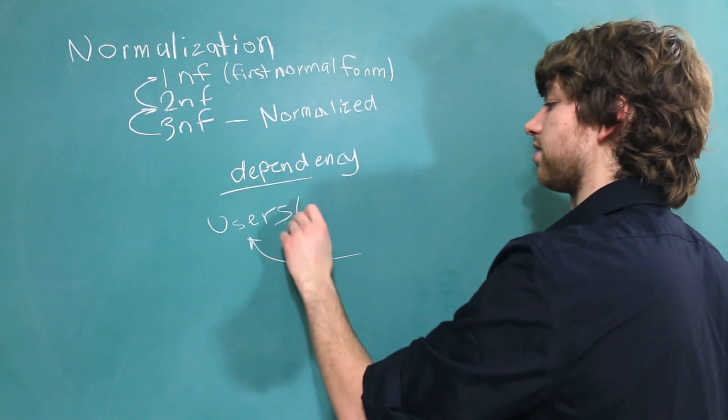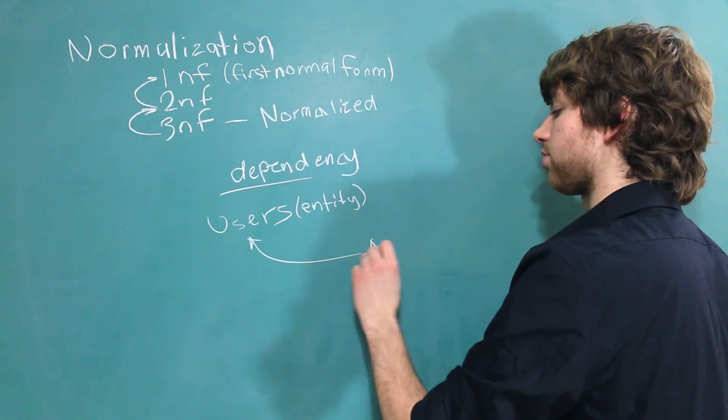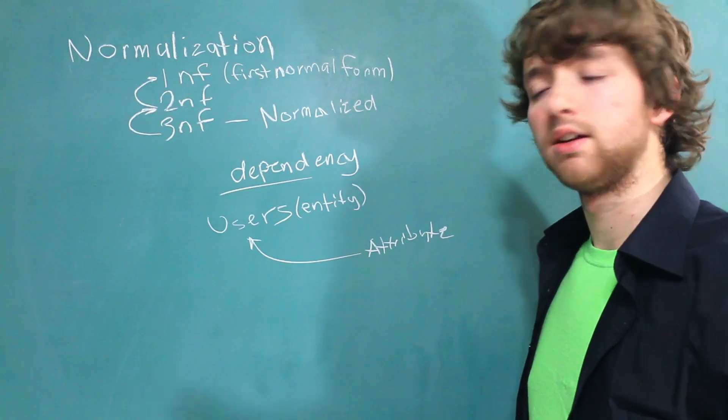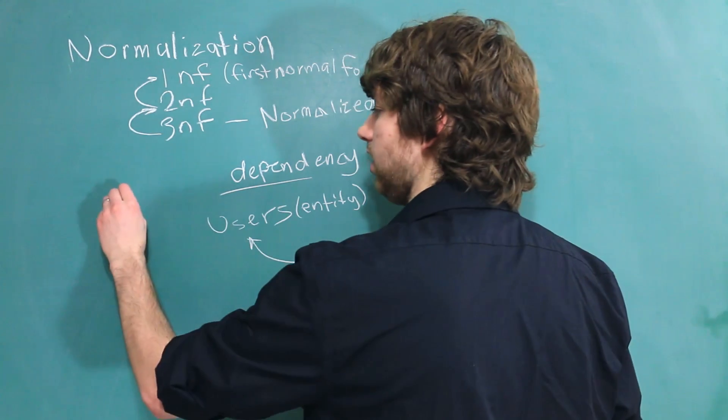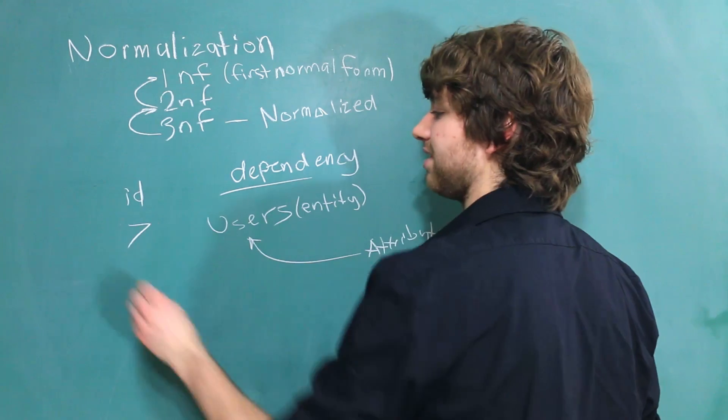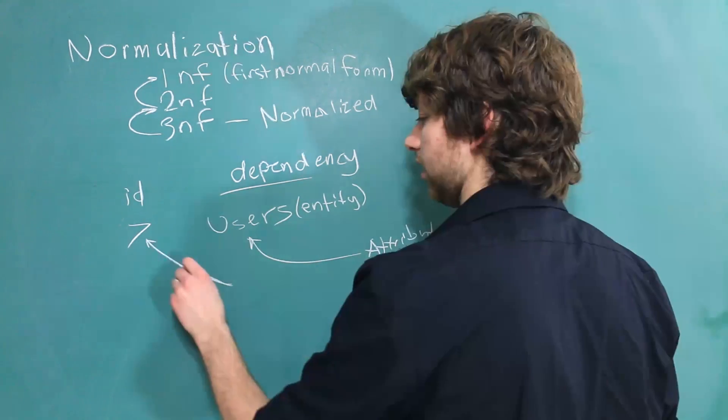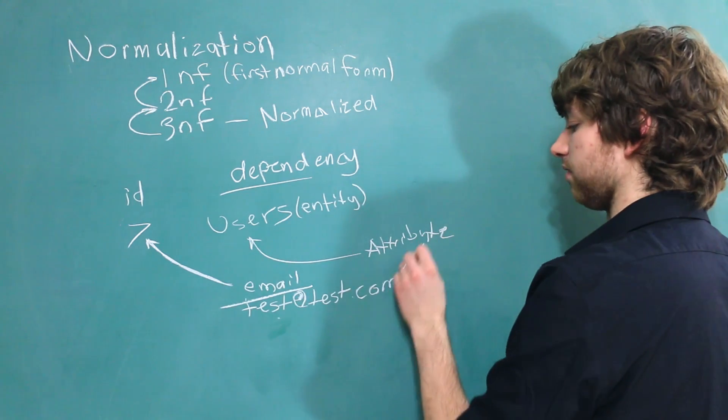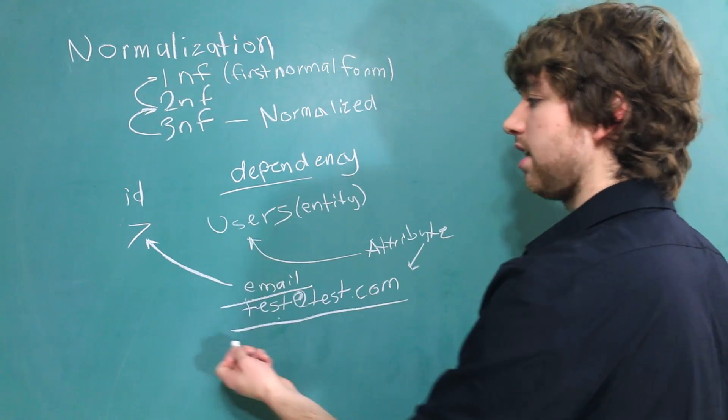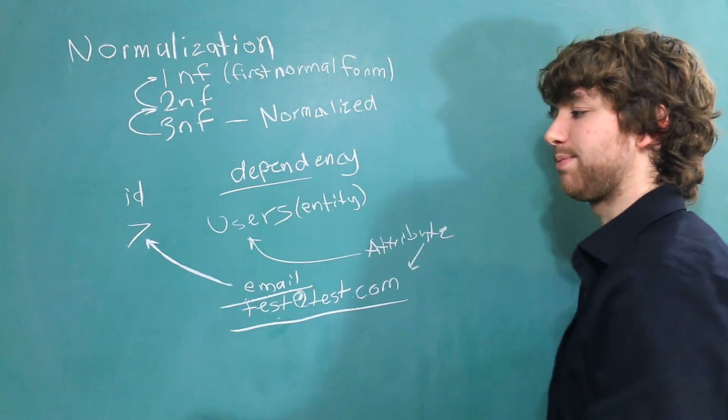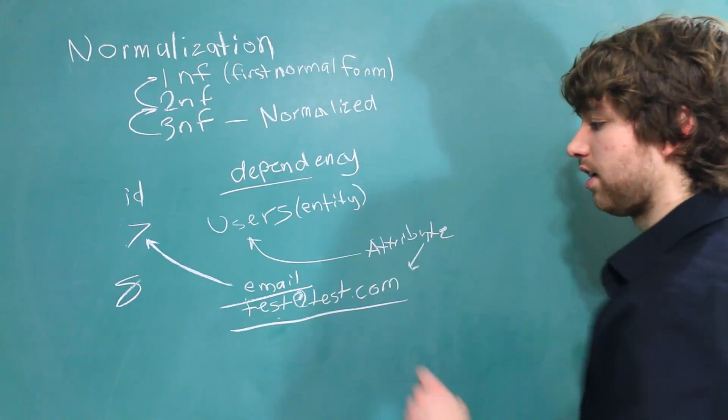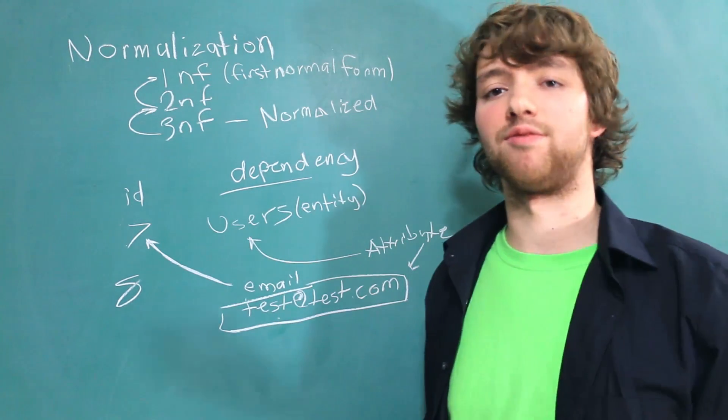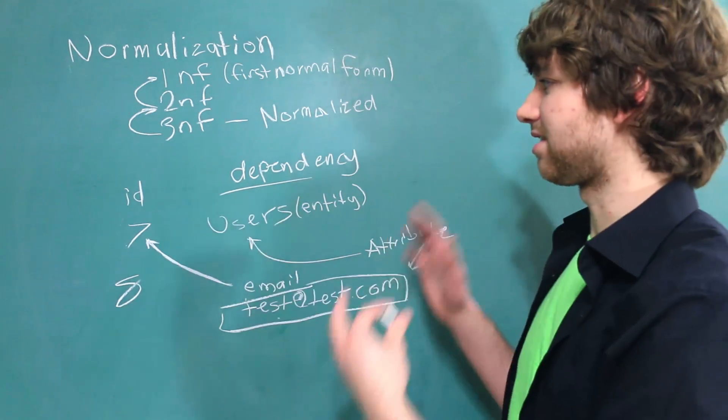You could say the user is the entity, and each thing describing it is the attribute. We can talk about a specific user using a primary key. So for example we could have an ID, and that ID for example could be 7 for a specific user. Now when we describe this user, we might have something such as an email. This is an example of an attribute. This email depends on the user. That's because if we change the user to someone else, the potential of this changing is very high. That's because every user doesn't have the same email. So that is an example of a dependency.